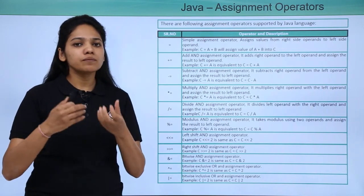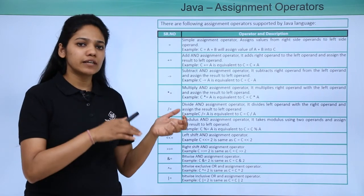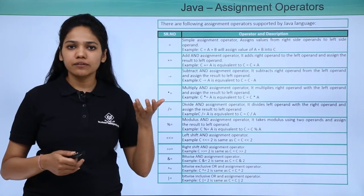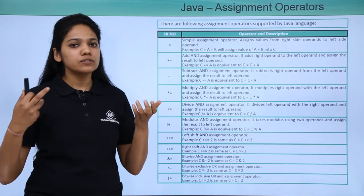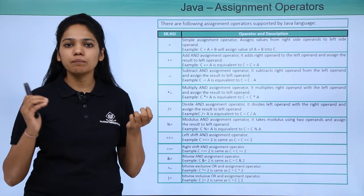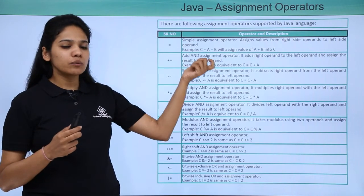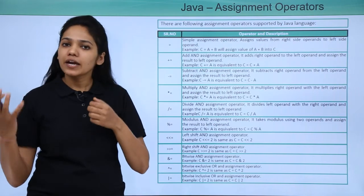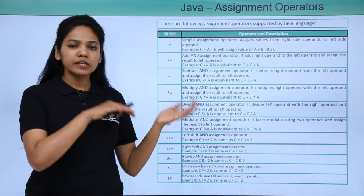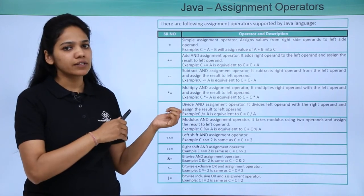What you do is perform certain operations on the right hand side and then save the value on the left hand side. You have two sides: one is on your left hand side, one is on your right hand side. The equation may hold a single operand or may be multiple operands. With plus equal to, you add the right operand value to the left hand side operand and then assign the value to your left hand side.